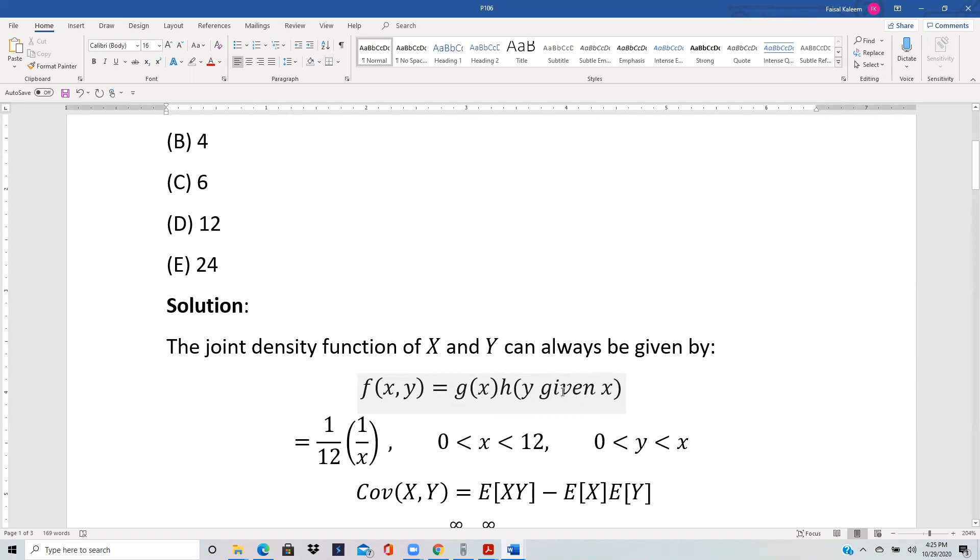Remember we've been using the fact that if the variables are independent then it's g(x) times h(y). This one actually reduces to that because when the variables are independent then y given x is just y, because y does not depend on whatever x is. So h(y given x) in case of independent variables will just be h(y).